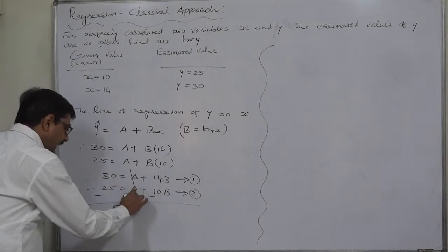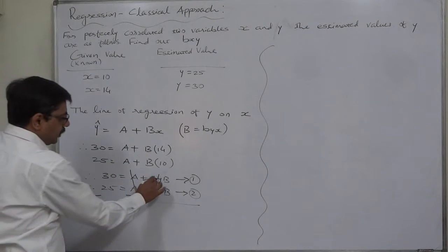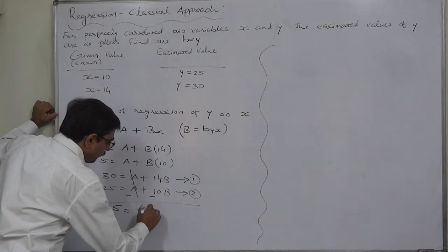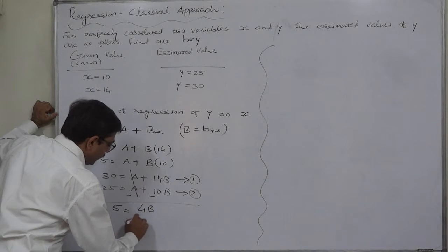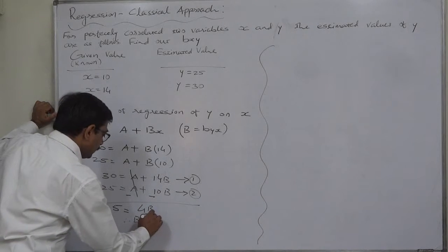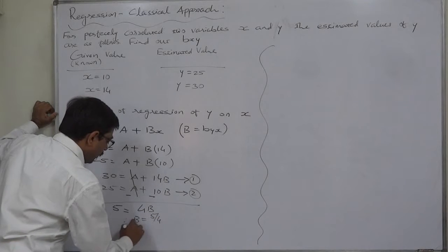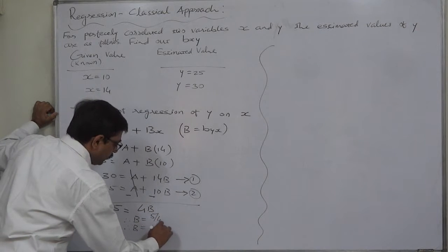Positive a and negative a are cancelled. 14b minus 10b equals to 4b. Therefore, b equals to 5 by 4 or b equals to 1.25.